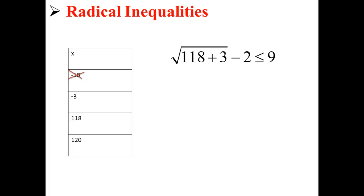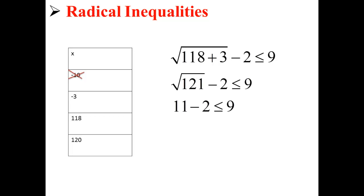Next we try 118. √(118+3) - 2 ≤ 9, that is to say √121 - 2 ≤ 9. This simplifies to 11 - 2 ≤ 9, or simply 9 ≤ 9. This is true, so 118 is a valid solution to our equation.